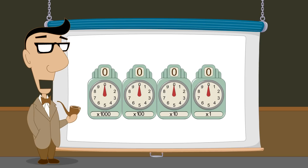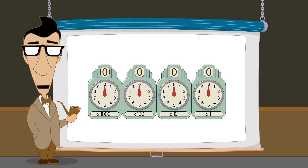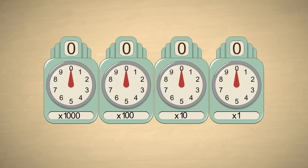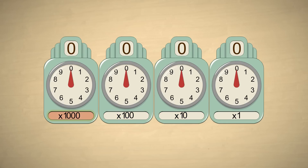In positional notation, the column occupied by a digit determines the multiplier for that digit. Since the decimal system is base ten, each column multiplier differs by a factor of ten from the adjacent columns. The multiplier for the rightmost digit is one. The digits to the left are multiplied by ten, one hundred, and so on.